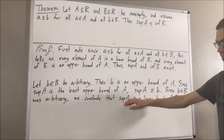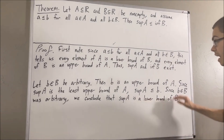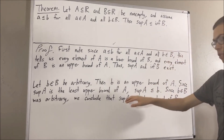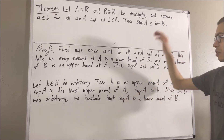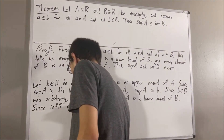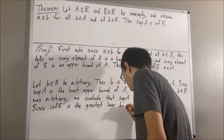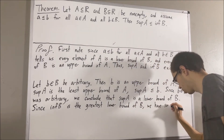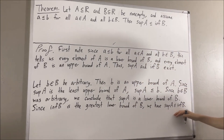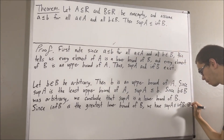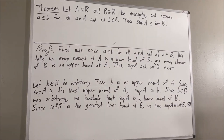And then, since the supremum of A is a lower bound of B, and the infimum of B is the greatest lower bound of B, we have that the supremum of A is less than or equal to the infimum of B. And that is exactly what we wanted to prove. So, this completes the proof.